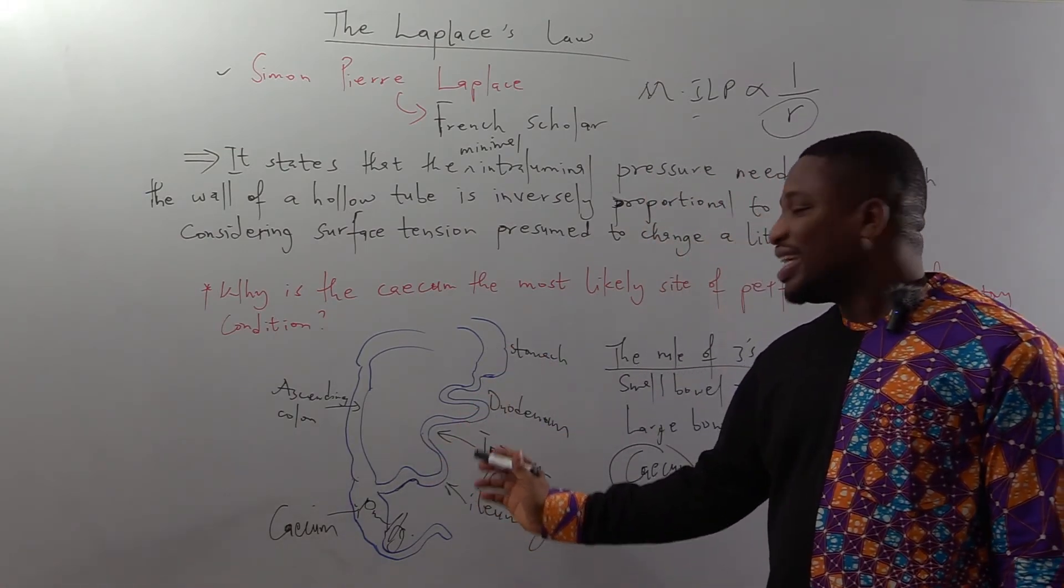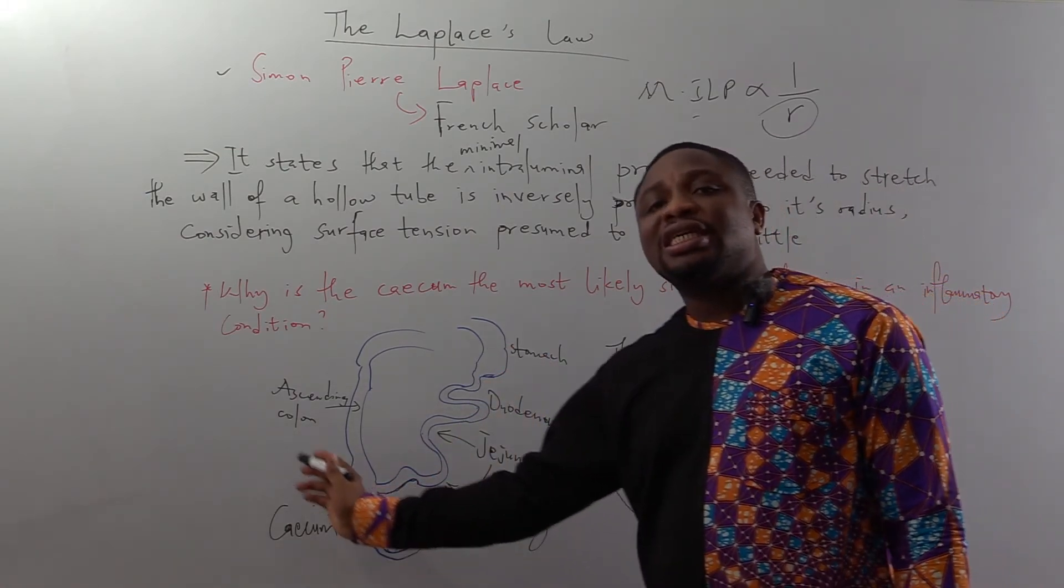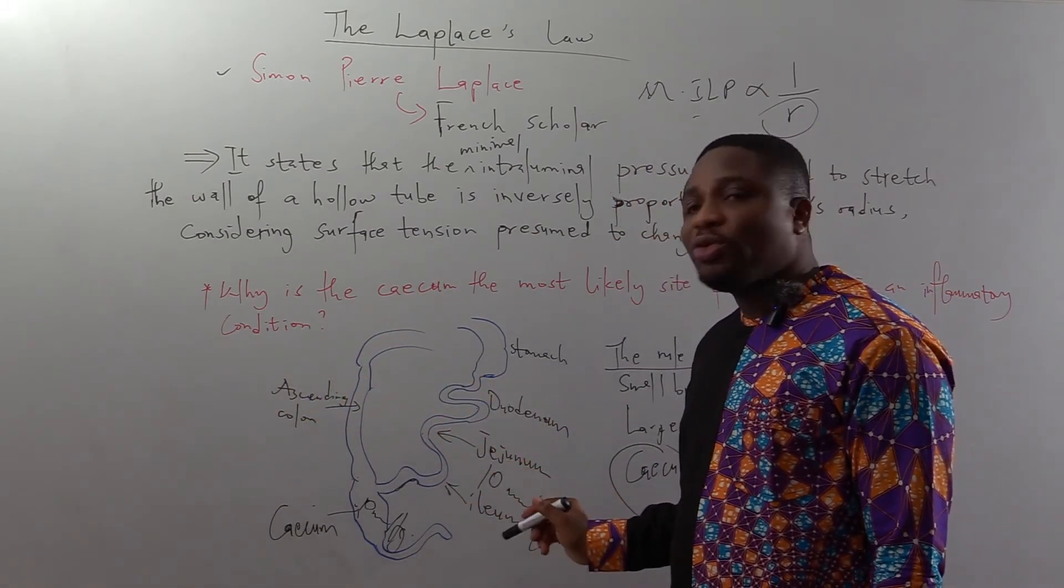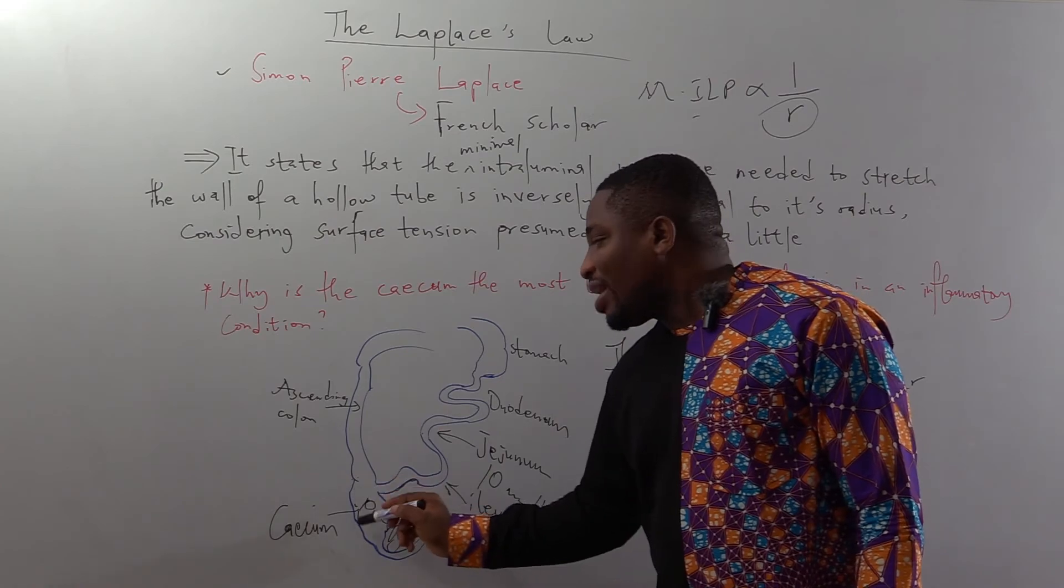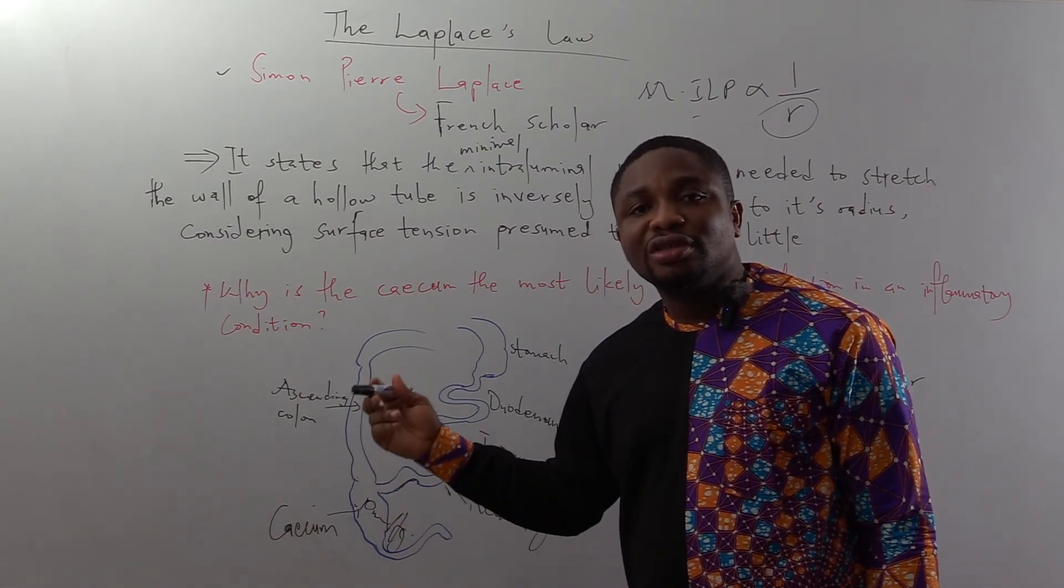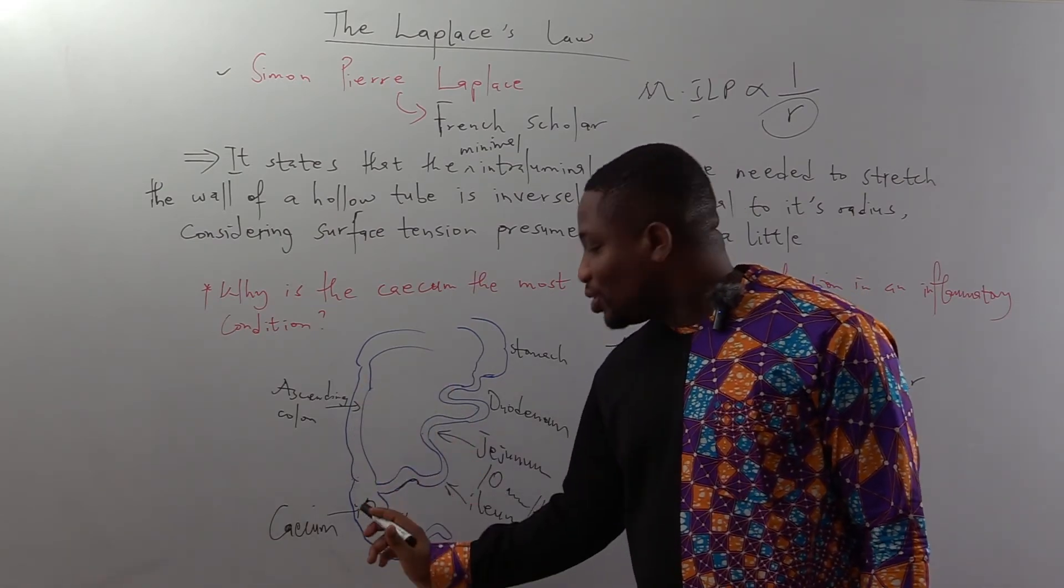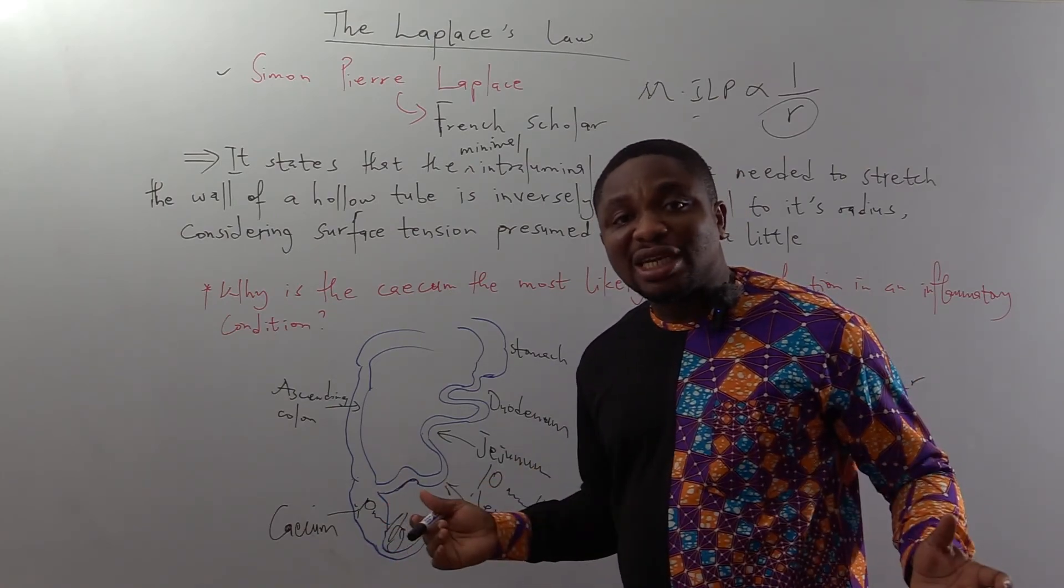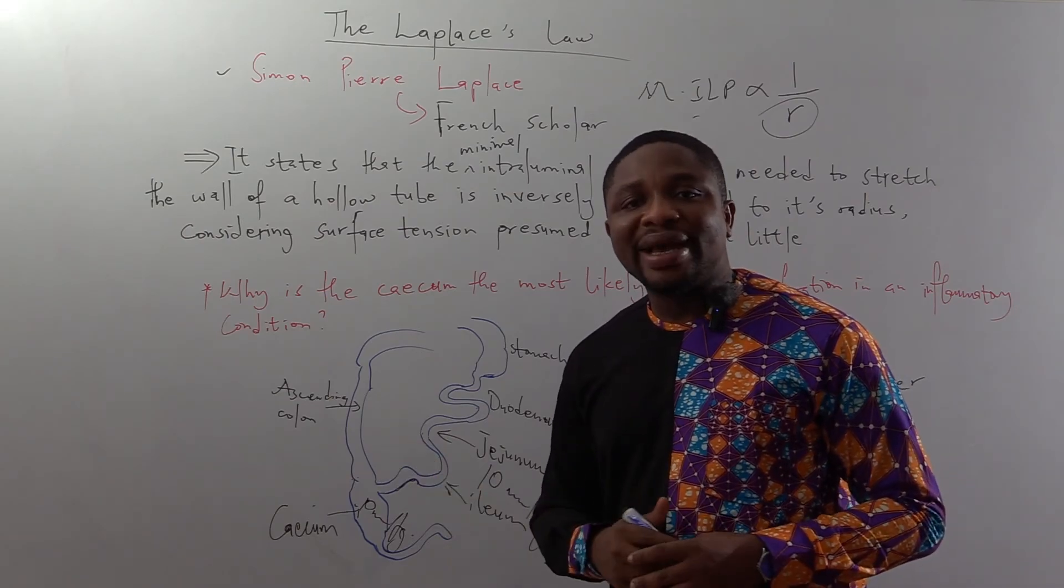So if the same pressure, that is 10 millimeters of mercury, for example, is applied across the segment of the bowel, it means that the 10 millimeters of mercury will be able to overcome the threshold minimal intraluminal pressure needed to distend the cecum. And that could easily distend the cecum, stretching the wall where it can easily burst.